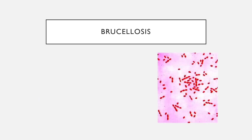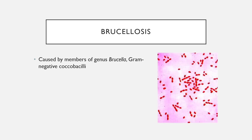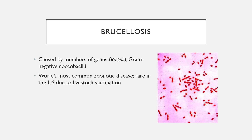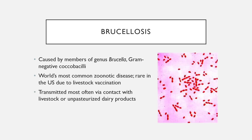Next we have brucellosis, caused by several members of the genus Brucella — all gram-negative coccobacilli, like Francisella tularensis. Brucellosis is the world's most common zoonotic disease — most often transmitted from animals to humans. It is rare in the United States because livestock animals here are vaccinated against it, but worldwide it is the most common zoonosis. It is transmitted through contact with livestock or consumption of unpasteurized dairy products.